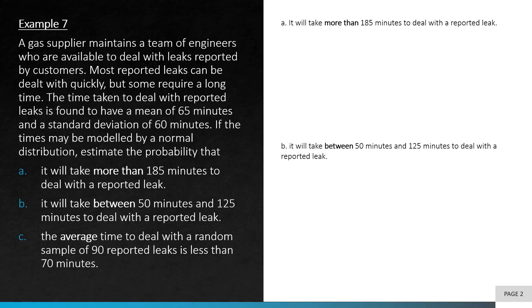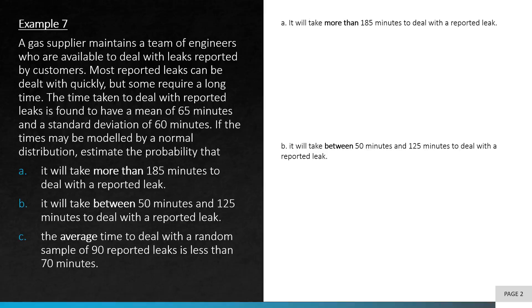Let's take a look at Example 7. A gas supplier maintains a team of engineers available to deal with leaks reported by customers. Most reported leaks can be dealt with quickly but some require a long time. The time taken to deal with reported leaks has a mean of 65 minutes and a standard deviation of 60 minutes. If the times may be modeled by a normal distribution, estimate the probability that: (a) it will take more than 185 minutes; (b) it will take between 50 and 125 minutes; and (c) the average time to deal with a random sample of 90 reported leaks is less than 70 minutes.